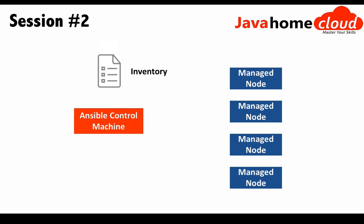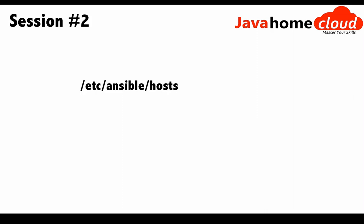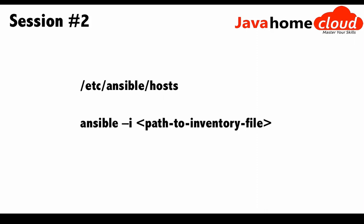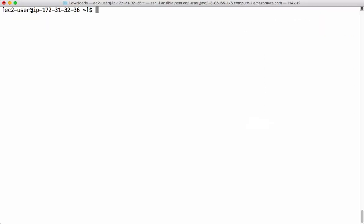In this video the focus is on just a few details, and over the course we will see more details about what the inventory file contains. The control machine reads the inventory and accordingly reaches all its managed nodes. When you install ansible, the default location of the inventory is /etc/ansible/hosts. If you have your own inventory file kept in a different location, that can be used via the -i switch — run any ansible command with the -i switch and provide the path to the inventory file.